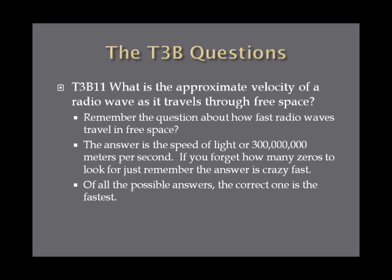What is the approximate velocity of a radio wave as it travels through free space? The answer is the speed of light, or 300 million meters per second. For this particular question, they're looking for 300 million meters per second. If you forget how many zeros, just remember the answer is crazy, wicked fast — of all the possible answers, the correct answer is the fastest.